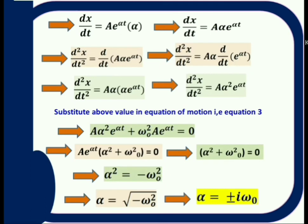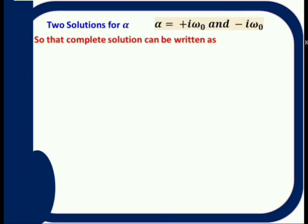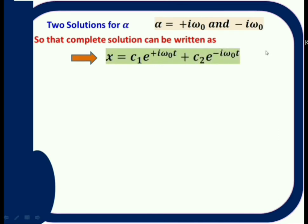So there are two values of α: α₁ = +iω₀ and α₂ = −iω₀. Since there are two solutions, the general displacement x is a superposition: x = C₁·e^(+iω₀t) + C₂·e^(−iω₀t), where α₁ and α₂ are the two roots.